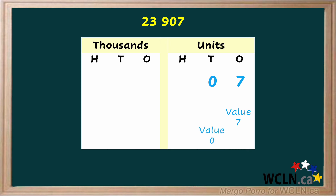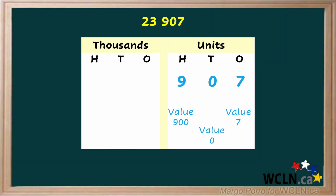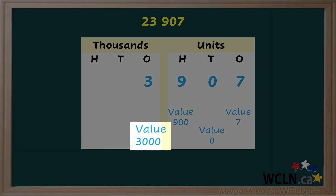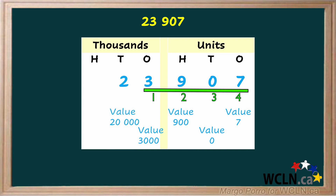The zero simply shows us that there are zero tens. Because the nine is in the hundreds place, it has a value of 900. There are two places after the nine on the place value chart and two zeros after the nine when giving its value. The three is in the one thousands place; it is worth three thousand — notice three zeros on three thousand and three places to the right of the digit. The two is in the ten thousands place. Two tens are twenty, so it is worth twenty thousand. There are four place value spots after the two and four zeros when giving the value.